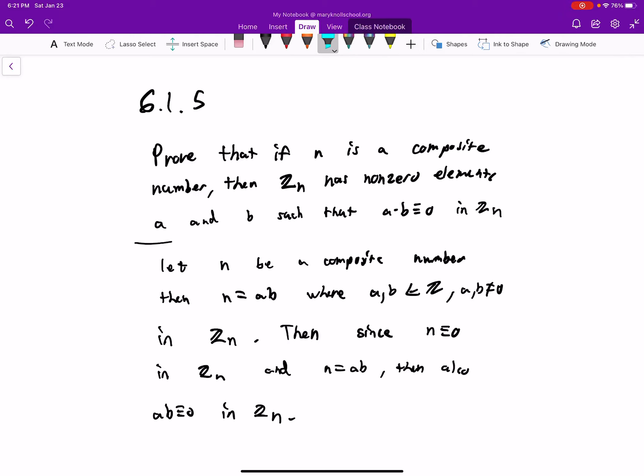Prove that if n is a composite number, then Z_n has non-zero elements a and b such that a times b is equivalent to zero in Z_n.